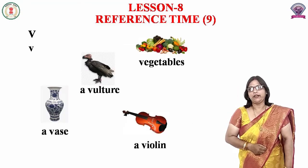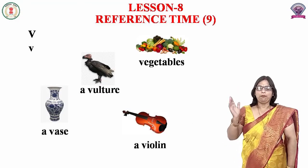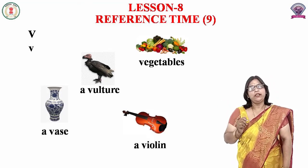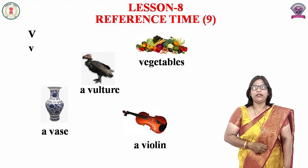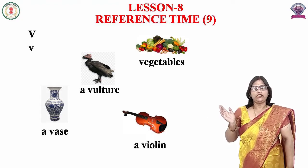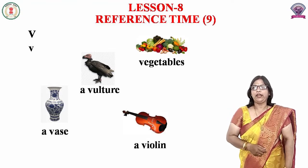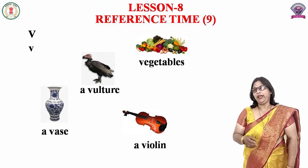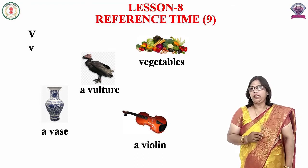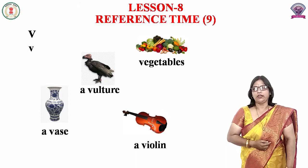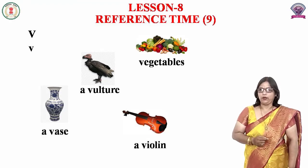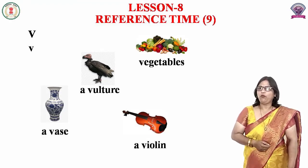Next हमारा letter है V। यहाँ पर capital V है और नीचे में small v है — दिखने में same ही दिखाई देता है। इससे बनने वाले words हैं: first word है vegetables यानी सब्जियाँ। Second word है vulture — V, U, L, T, U, R, E, vulture। Third word है vase — V, A, S, E, vase। And next word है violin — V, I, O, L, I, N, violin।